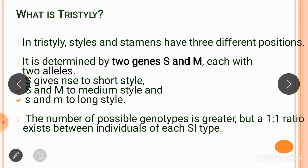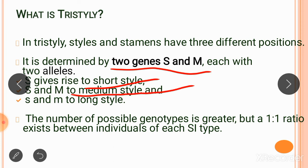Next is tristyly. Like distyly, here there are three different positions of style and stamens. This condition is determined by two genes, capital S and M, each with two alleles. If capital S is present, it produces a short style; if capital S and capital M are present together, they produce a medium style; if the recessive forms — small s and small m — are present, they produce a long style.